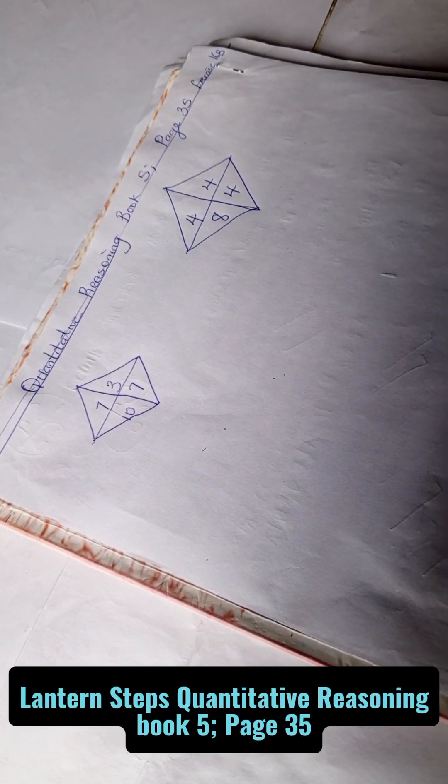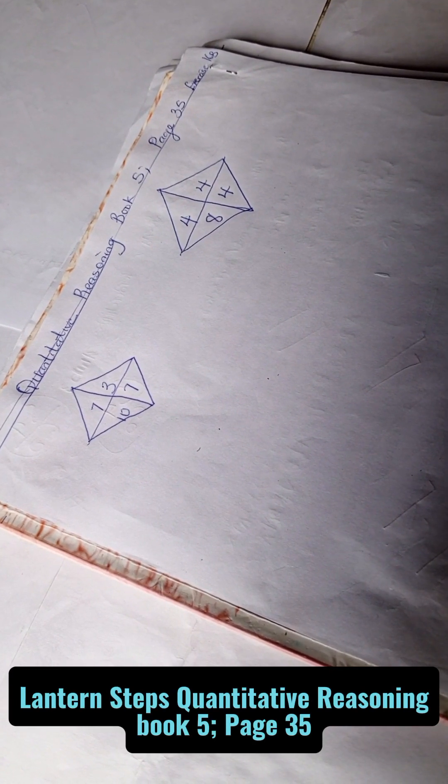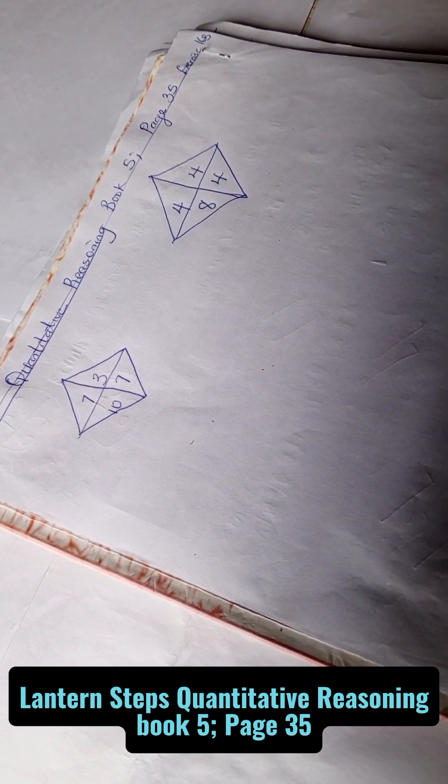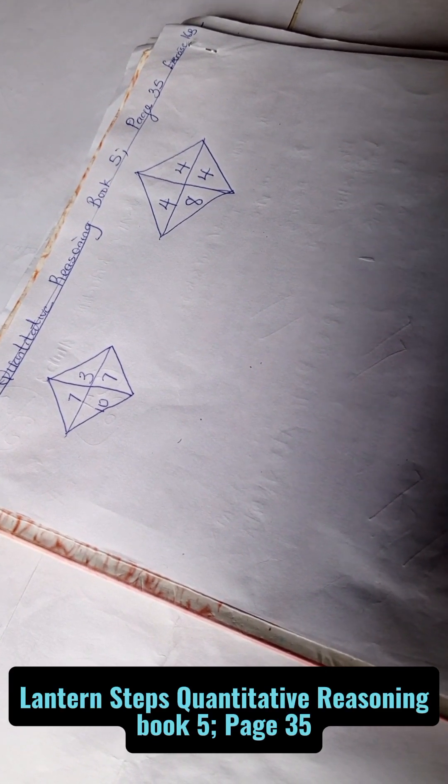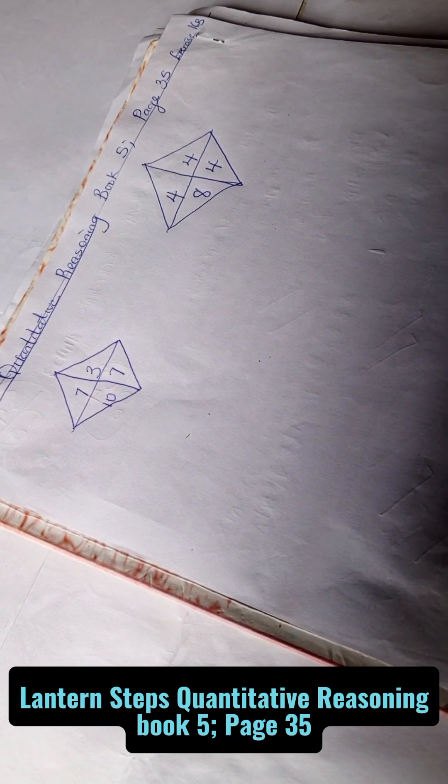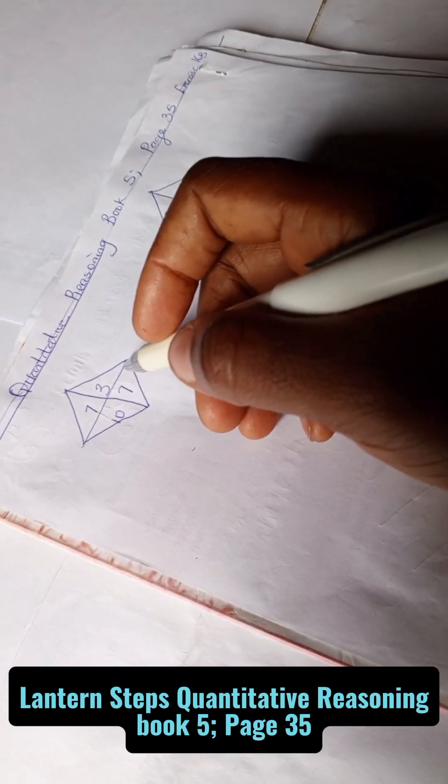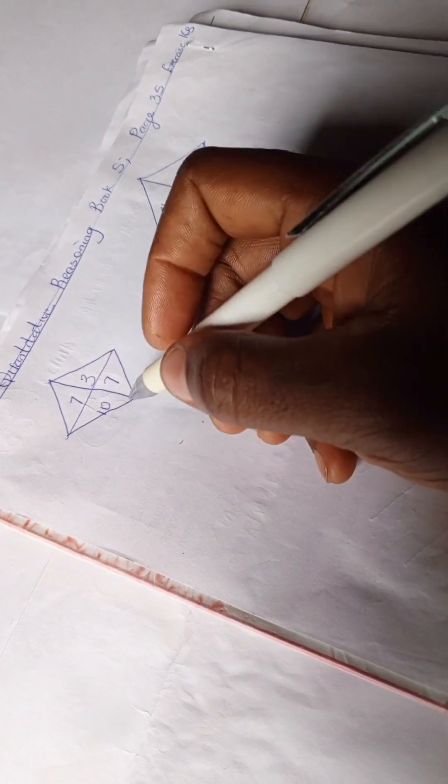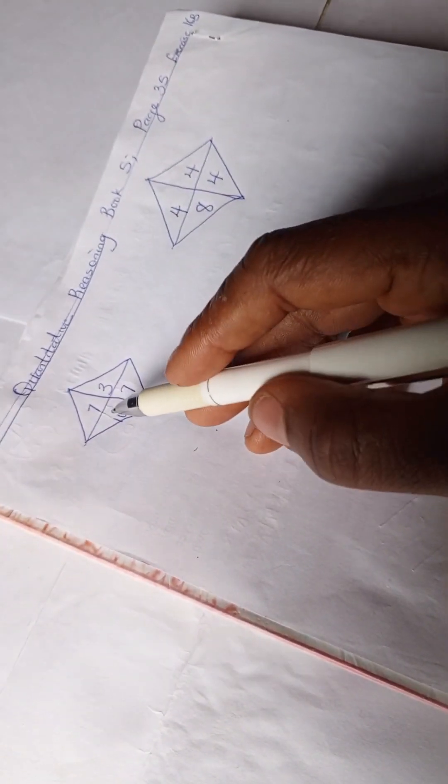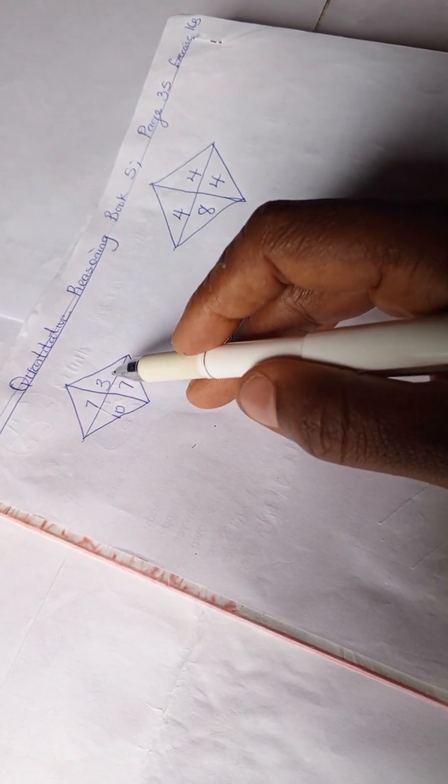Hello, welcome to quantitative reasoning solution session. Today we're looking at quantitative reasoning from Lantern Step Book 5, Page 35, Exercise 16B. We have this problem before us and we're going to try to solve them. Looking at this number, you realize that it appears that numbers are equivalent in value.